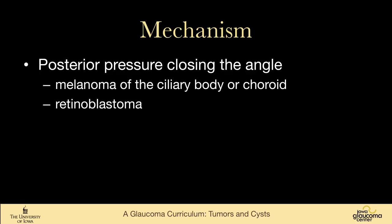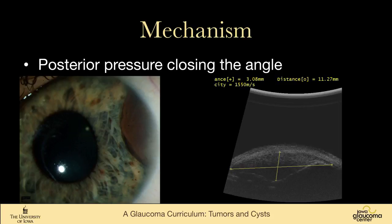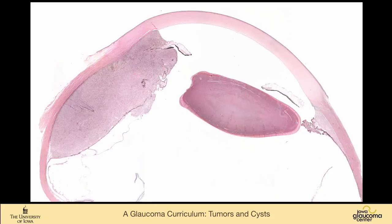One can also have posterior pressure closing the angle from behind. This can happen with a very large melanoma of the ciliary body or choroid, or from a retinoblastoma. This young patient has a ciliary body melanoma that has broken through into the anterior chamber — you can see the iris is just pushed out of the way. On ultrasound, this is a very large mass, 11.27 millimeters in its largest dimension. On histopathology, it has distorted the lens and completely obliterated the iridocorneal angle, with the iris enmeshed in the tumor.